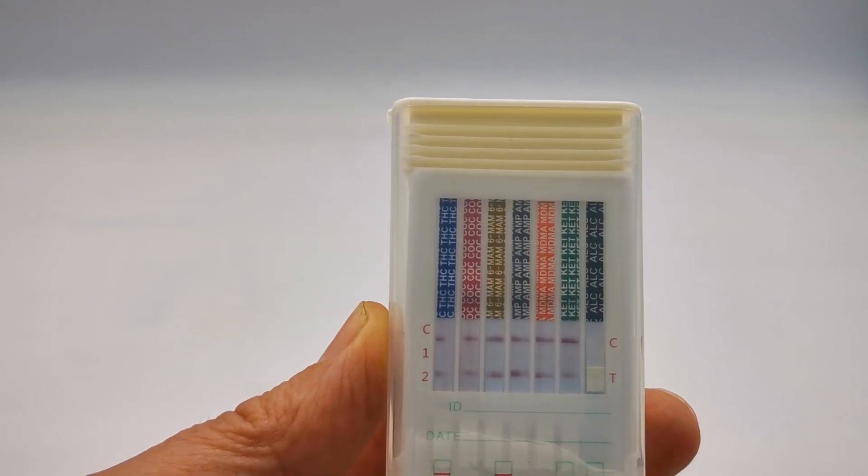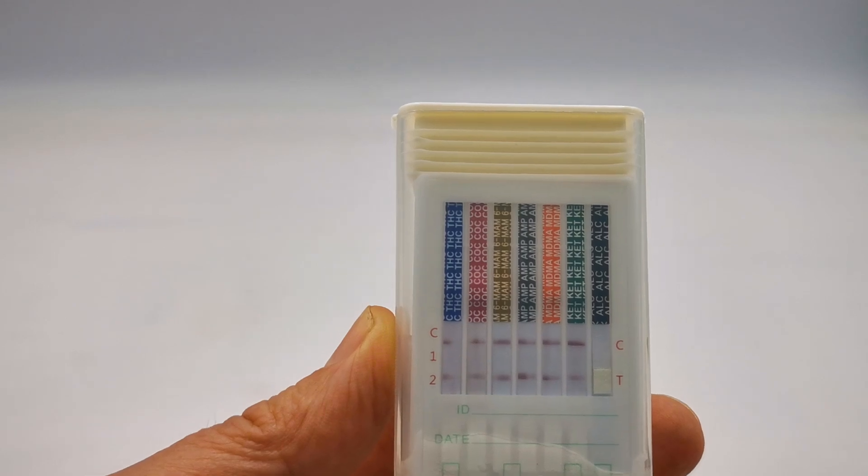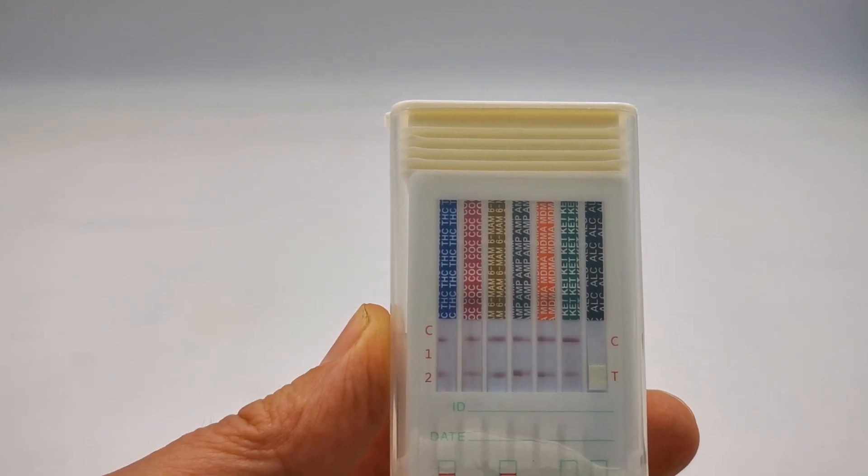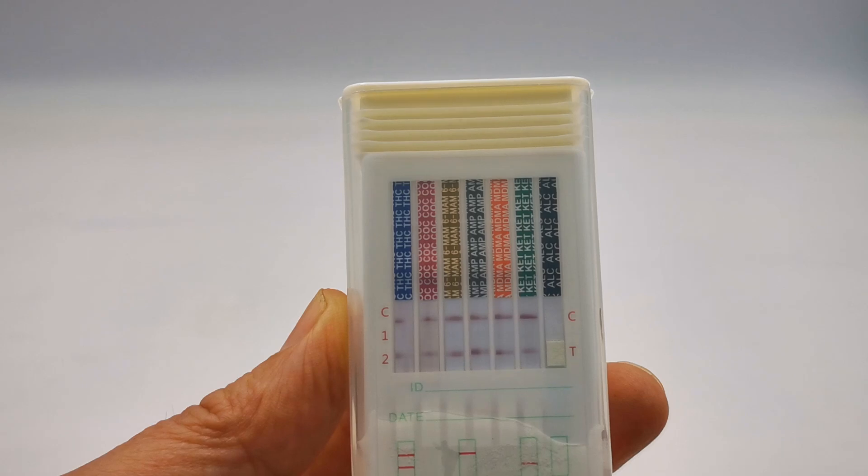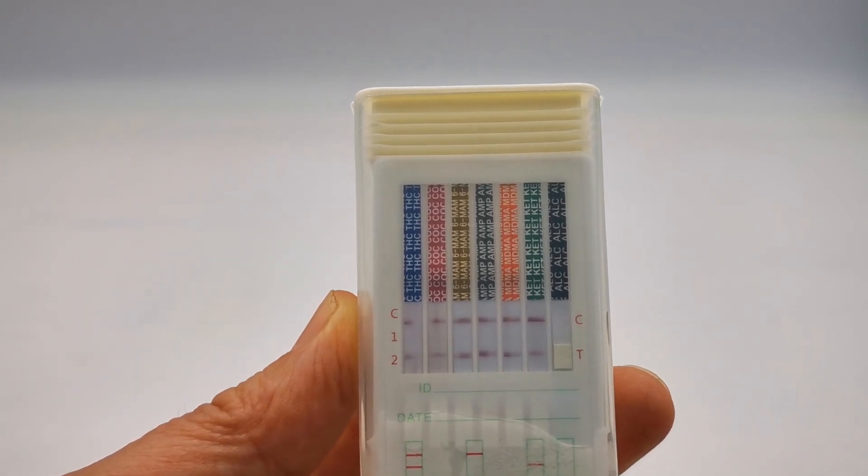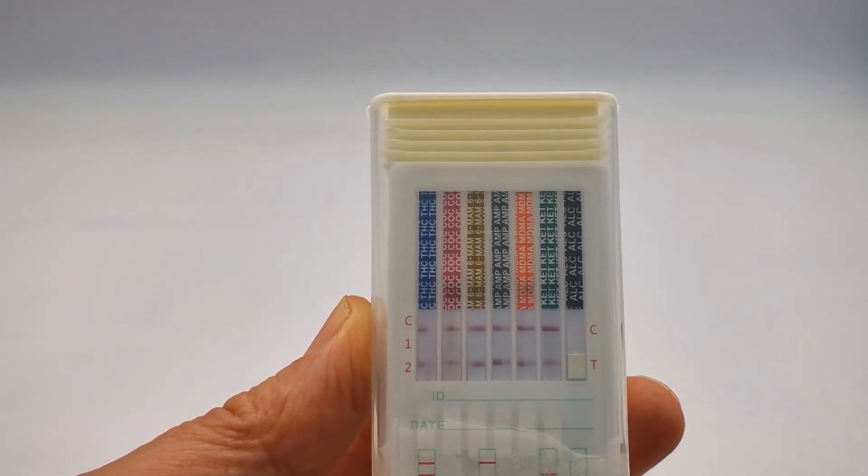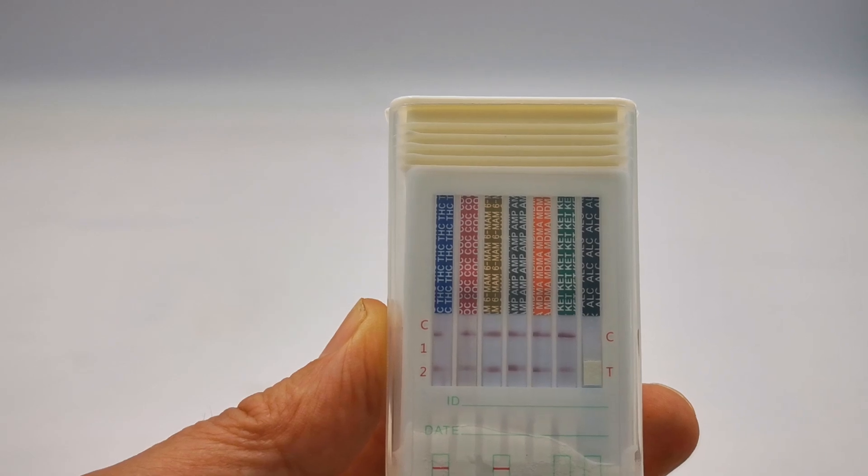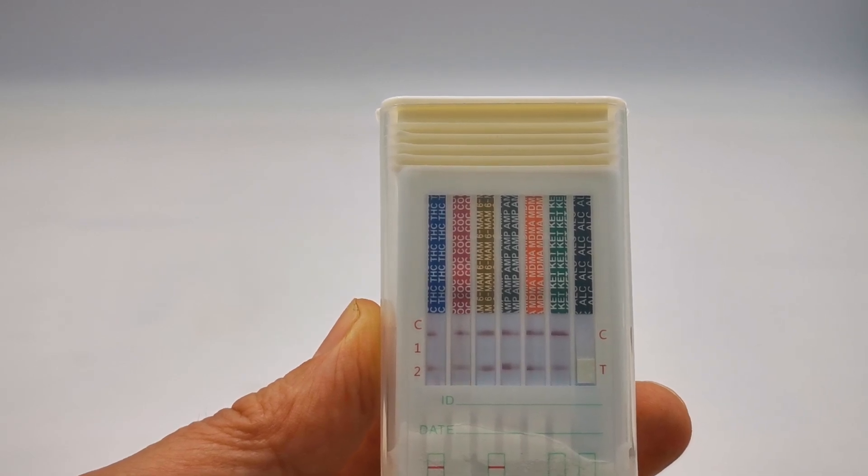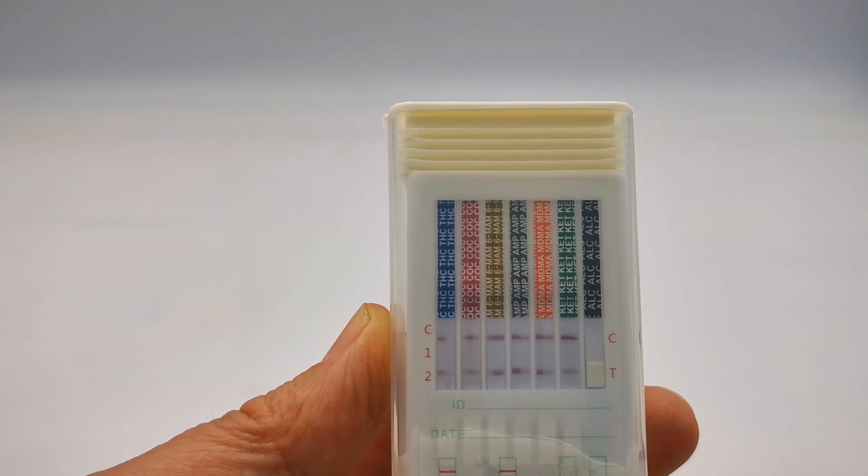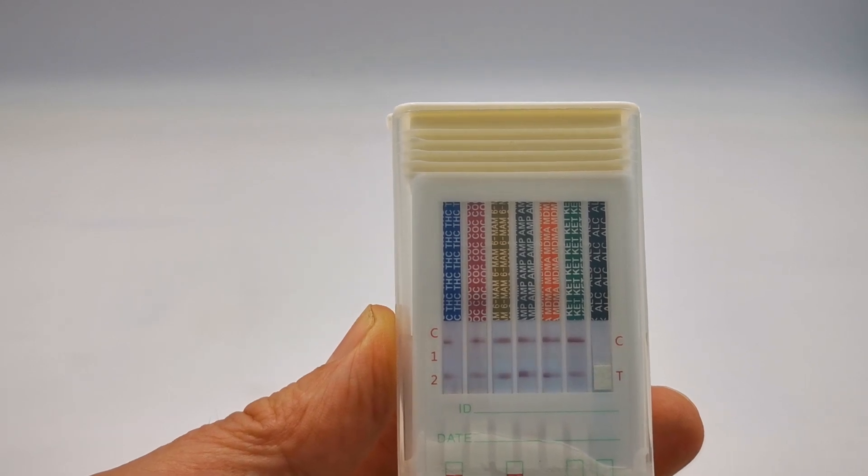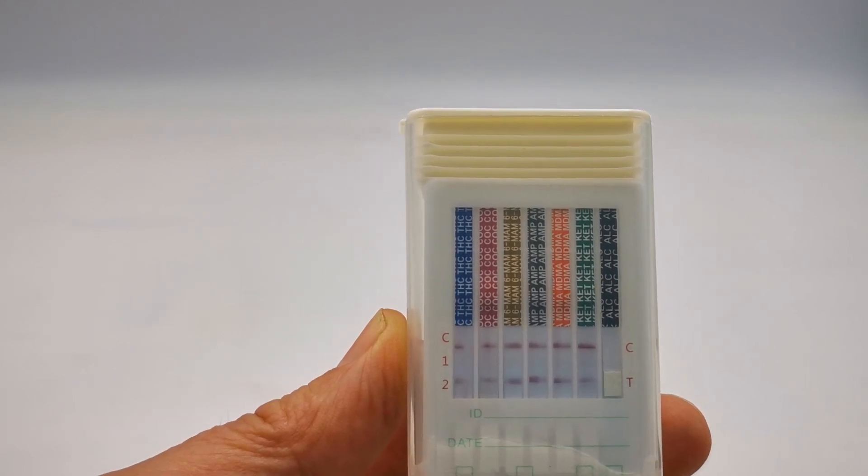It is important that you give it a full eight minutes development time for that test line to develop. But if the test lines and control lines have shown up much earlier, say two or three minutes, they're not going to disappear, so you can interpret that as a clear negative result as early as two to three minutes. If you want to read the results that early you can, but do allow eight minutes development for a test line to form.